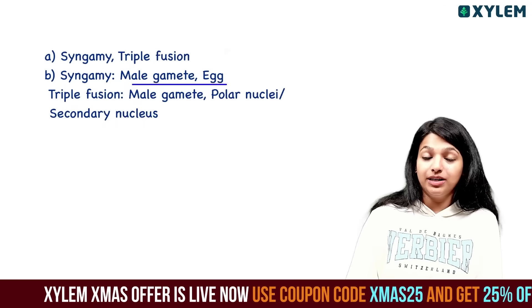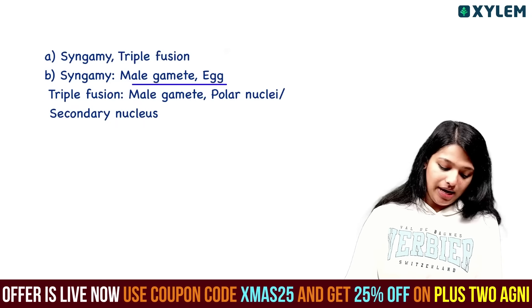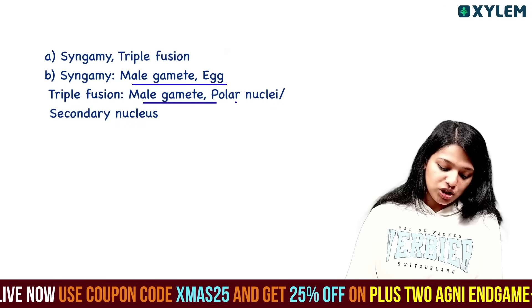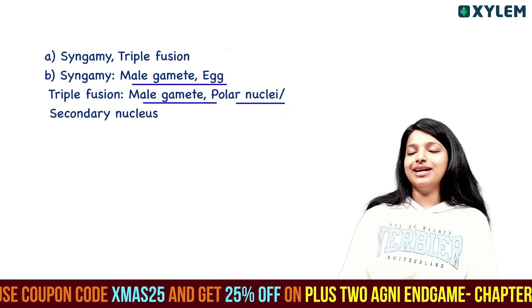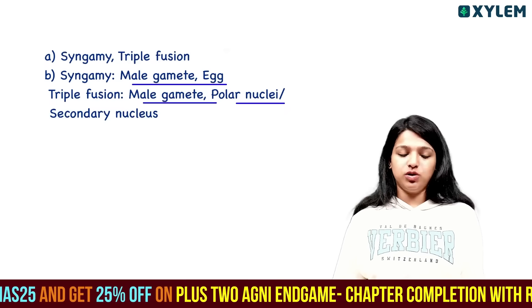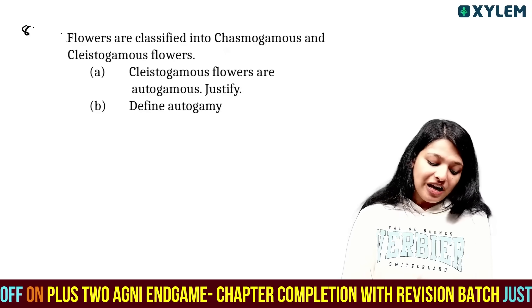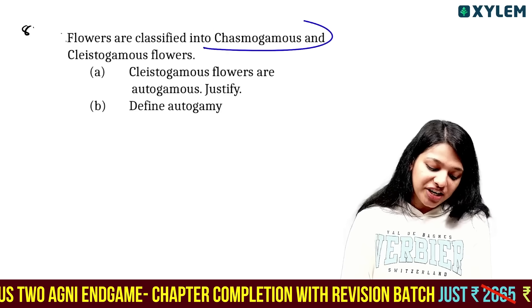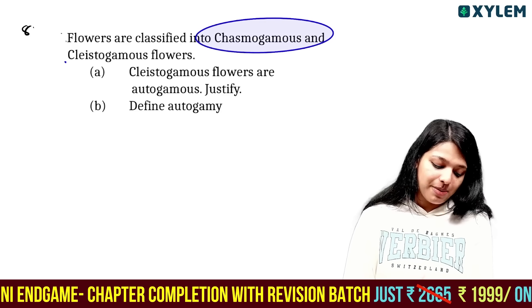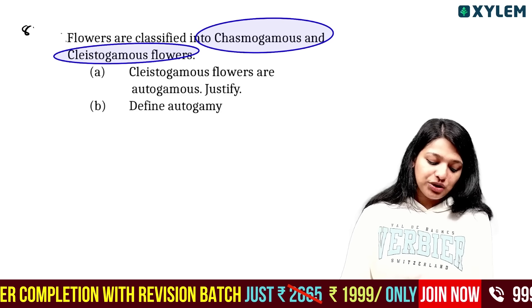The nuclei involved in each fusion: syngamy involves one male gamete and one egg cell. Triple fusion involves one male gamete, and two polar nuclei, producing the primary endosperm nucleus.